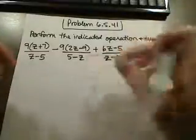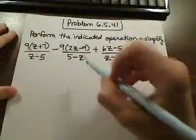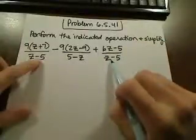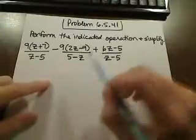In this problem, you can see the denominators look very similar, but when we compare them, like for instance these two to this one, they're the same but they're different by a negative. Let me show you what I'm talking about here.